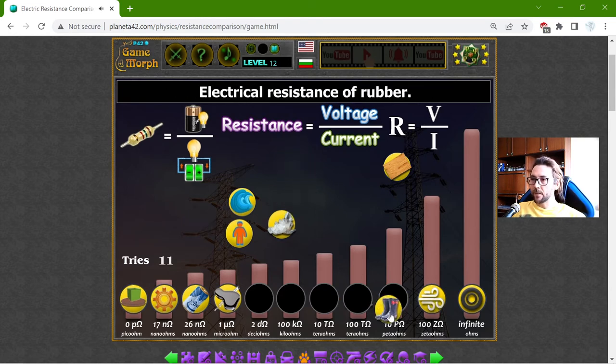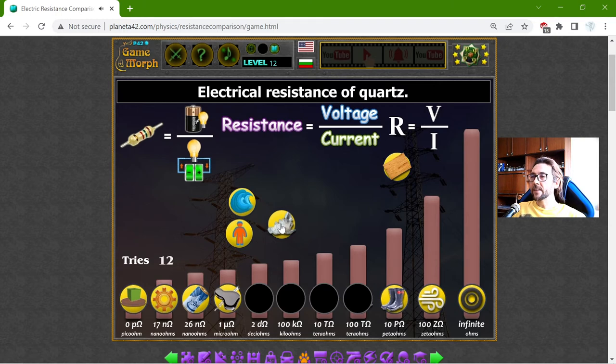I think the rubber should be next with 10 peta ohms. And I also know that the glass is a good insulator. So, it should be with 100 tera ohms.